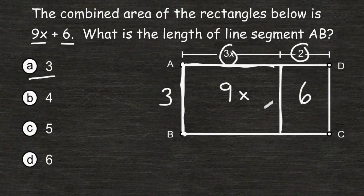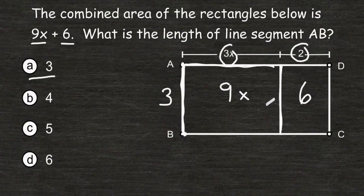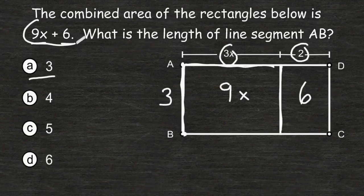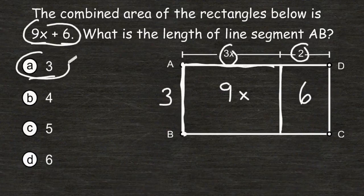So the combined area of both rectangles would be 9x plus 6, which is the area that's given within the problem. So we plug 3 in right away to test our results, and we found out that that would give us the desired result.